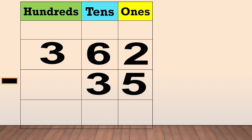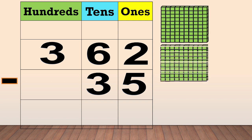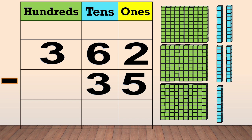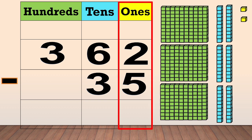362 has three hundreds, six tens, and two ones. First, we subtract the ones. Two minus five — we cannot subtract five from two, so we need to regroup one ten into ten ones.